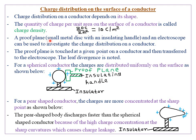A proof plane — usually a small metallic disc with an insulating handle — is used to obtain the amount of charge distributed on a particular conductor. A proof plane and an electroscope can be used together to investigate the charge distribution on a conductor. The proof plane is touched at a given point on the conductor and then transferred to the electroscope, where you observe the leaf divergence.